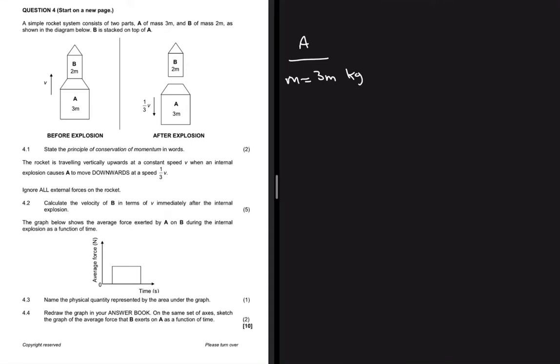Then B has mass 2m kg. As shown in the diagram below, B is attached on top of A. If you look on the left-hand side, before the explosion B is on top of A.